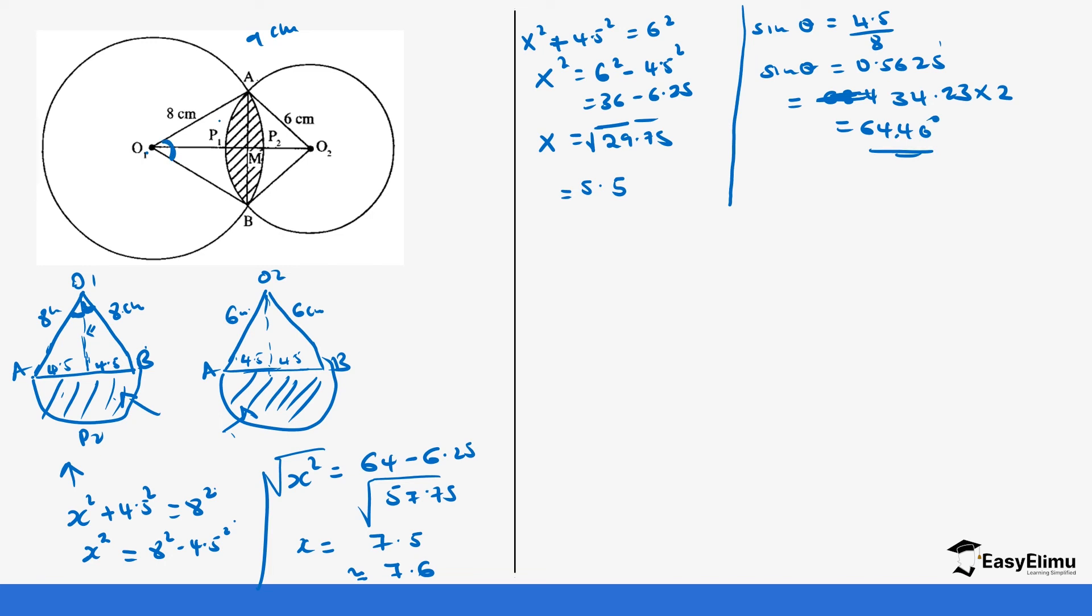So now we have this angle which is 64.46. We do the same for the smaller circle. So it's going to be sine equals 4.5 over 6, which is the same as 0.75. You go back to our tables and check where 0.75 lies, and we're going to get 48.59. So you get this one angle. For both of them, you're going to multiply by 2, which gives us 97.18 degrees.